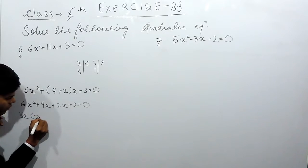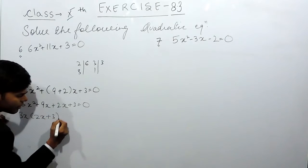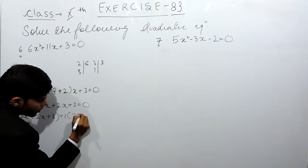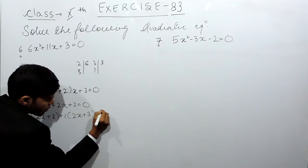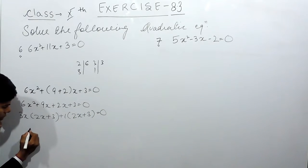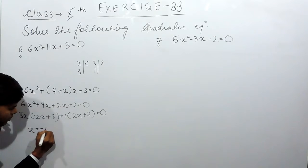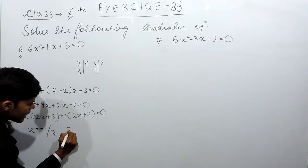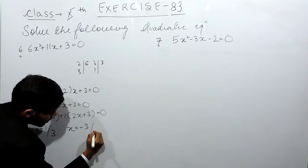3x is common, so it will be 2x + 3. Plus 1 is common, so it will be 2x + 3 = 0. So x will be equals to minus 1 by 3, and x will be equals to minus 3 by 2.